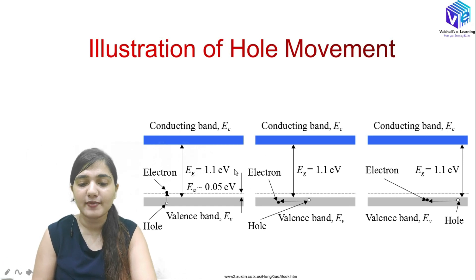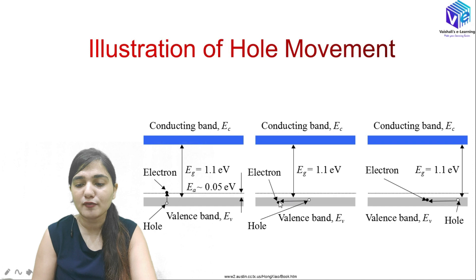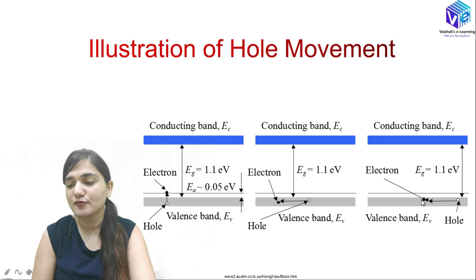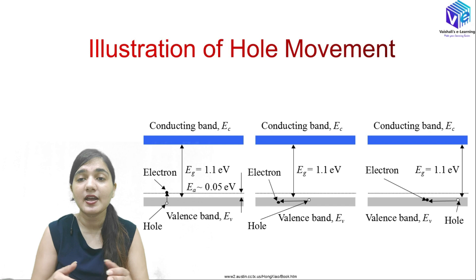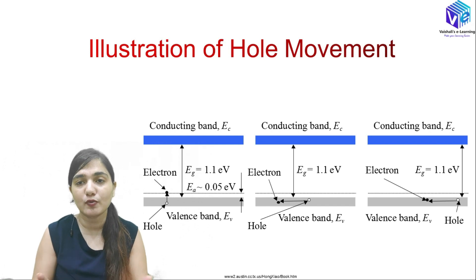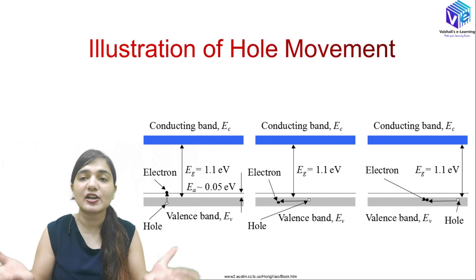Regarding hole movement: when a hole exists at a position, a nearby electron moves into that hole, creating a new hole at the electron's original position. This process continues, effectively moving the hole in the reverse direction of electron movement. So holes always travel in the opposite direction to electrons.